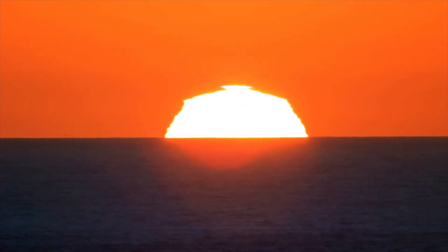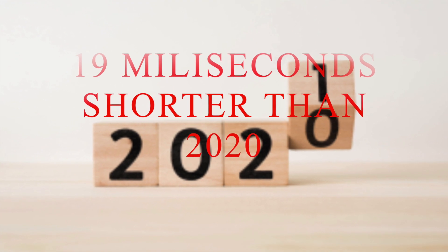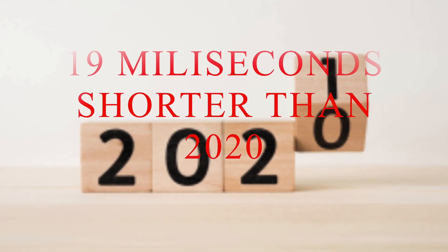This resulted in the shortening of the day. For example, a Sunday in January only lasted for 23 hours, 59 minutes, and 59.9998927 seconds. In fact, 2021 is expected to be 19 milliseconds shorter than 2020.